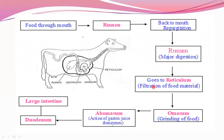After digestion in the rumen is complete, food moves to the reticulum — the second chamber — where filtration of food material and further digestion takes place. Food then goes to the omasum, the third chamber, where food along with bacteria enters and grinding occurs. The particle size of food is reduced in the omasum, and some nutrients, water, and bicarbonates are absorbed here. Next, food moves to the abomasum, the true stomach, which is similar to our stomach. It secretes gastric juice and enzymes from its walls, creates an acidic medium, kills bacteria, and aids digestion through gastric juice and enzyme action.